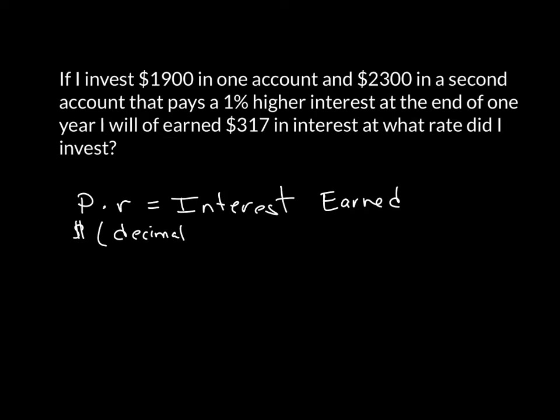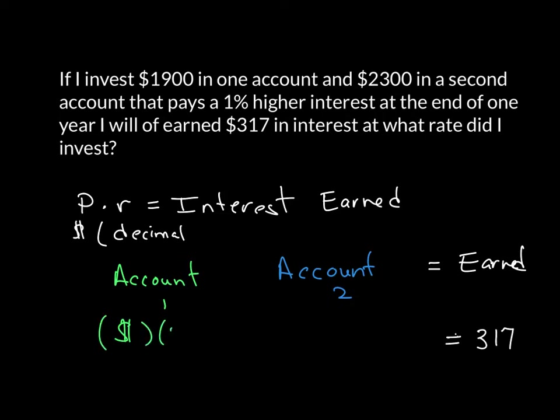So let's go ahead and break this down. We have account one, and then we have account two, and lastly, we have the money that was earned. So the money that was earned is probably the easiest part. It was $317. Now, for each of the accounts, I need both money, then I need the rate, and I want to add those together.